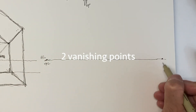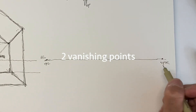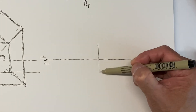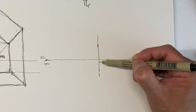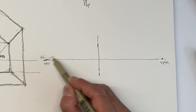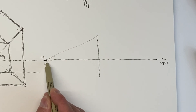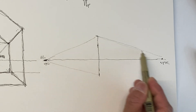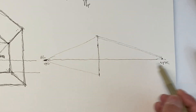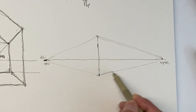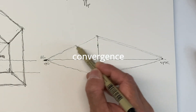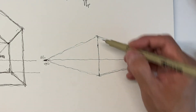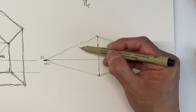Instead of having one vanishing point, we're going to have two vanishing points. So this side goes to one point and the other side goes to another point. We have a vanishing point left and a vanishing point right. Going to that vanishing point and going to that vanishing point — I'm just going to eyeball this.